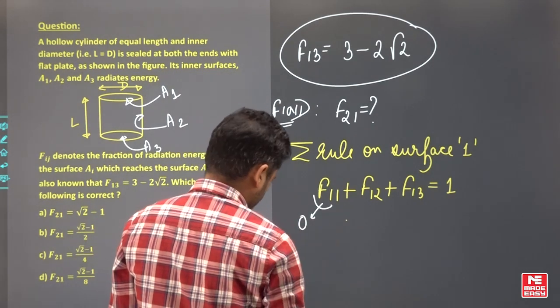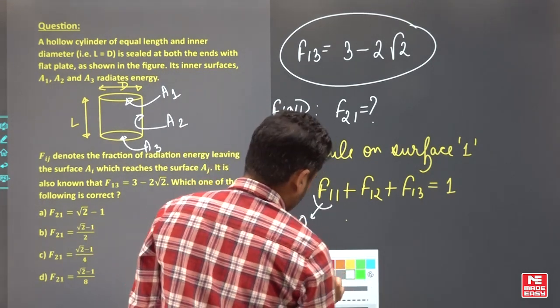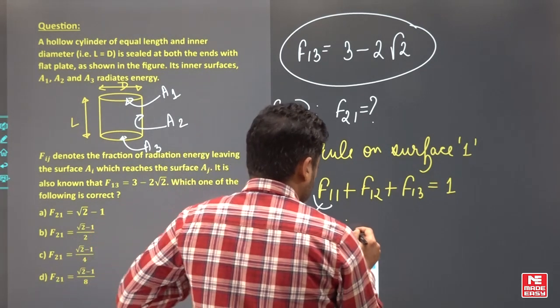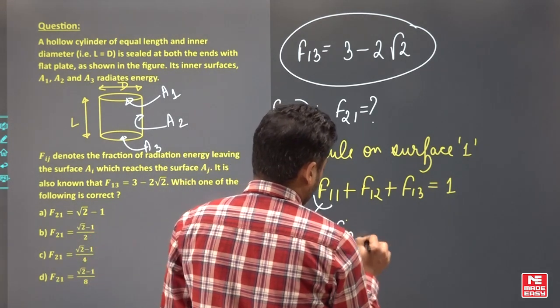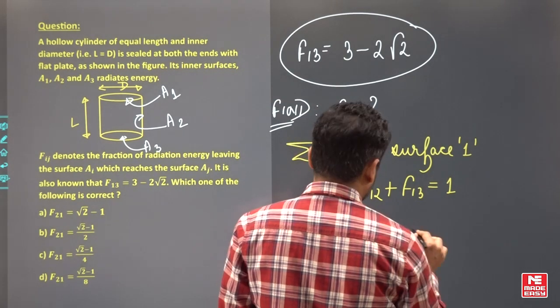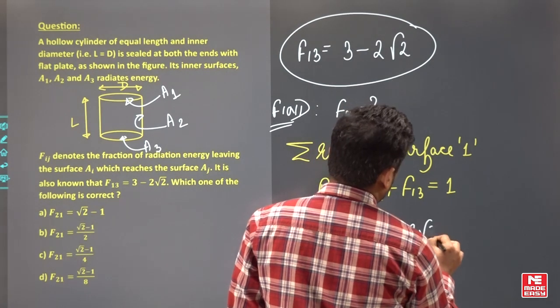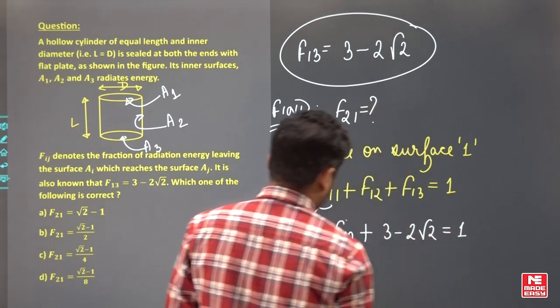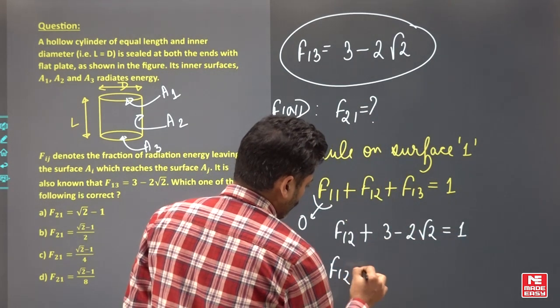Surface 1 is a plain surface, so F11 equals 0. From here you can get F12 plus F13, which is 3 minus 2 root 2, equals 1. So F12 equals what?